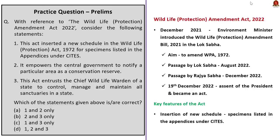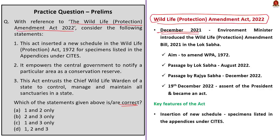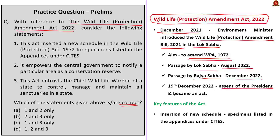The next question is a three-statement question about the Wildlife Protection Amendment Act of 2022. The Union Minister of Environment, Forest and Climate Change introduced the Wildlife Amendment Bill 2021 in the Lok Sabha in December 2021, seeking to amend the Wildlife Protection Act of 1972. The bill was passed by Lok Sabha in August 2022 and Rajya Sabha in December 2022, and received the President's assent on 19th December 2022, becoming the Wildlife Protection Amendment Act of 2022.